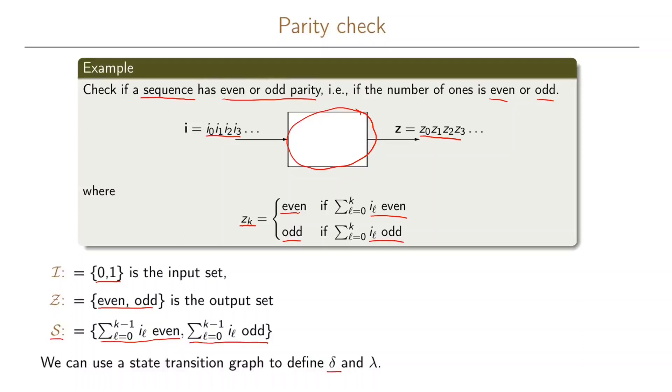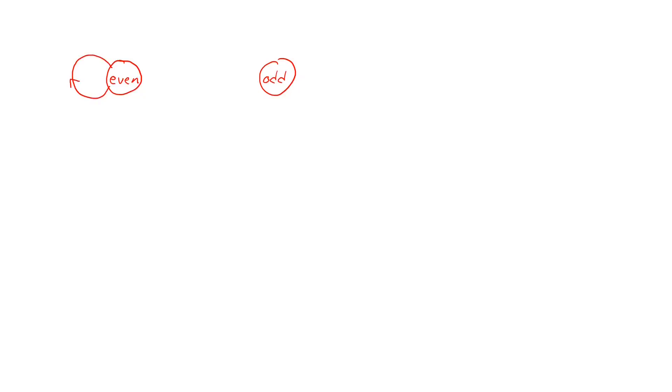To define our state transition function and output function, we use a state transition graph. We have two states: one defined as even and one called odd. These states remember the parity of previous inputs. If we are in state even and get a zero as input, we stay in state even and the output is even. If we instead get a one as input, we transition to the state called odd, and the output is odd.